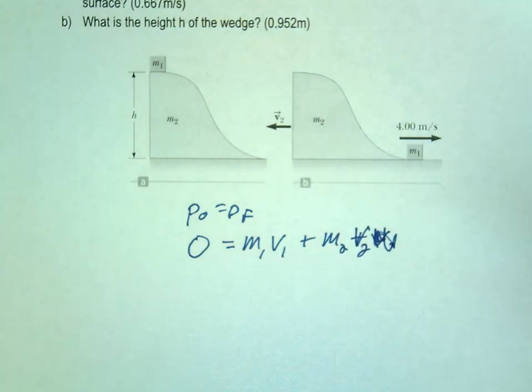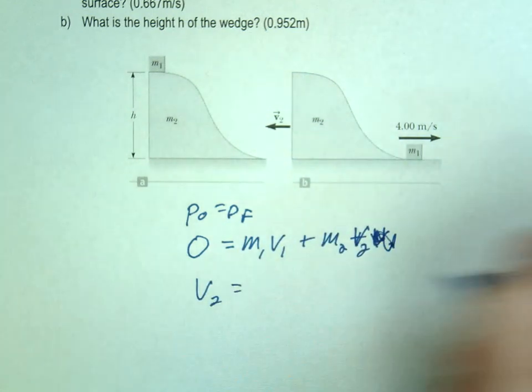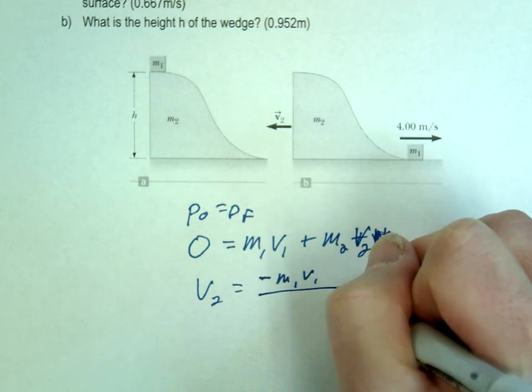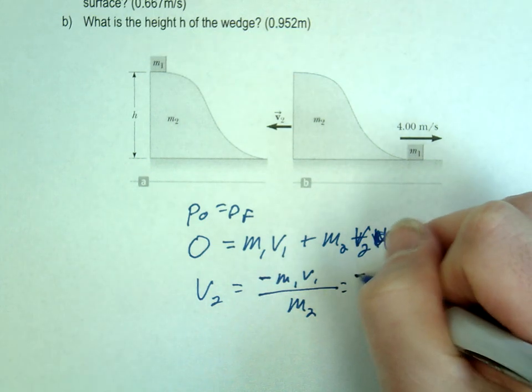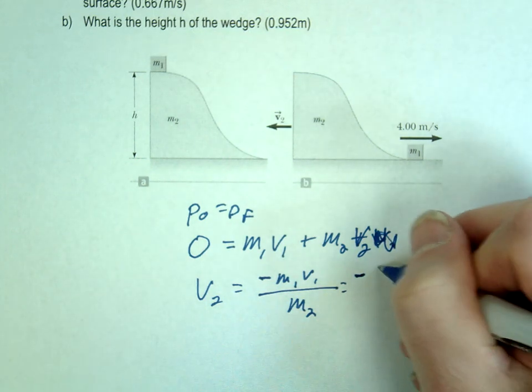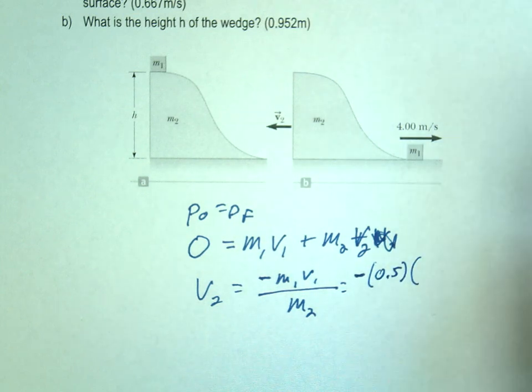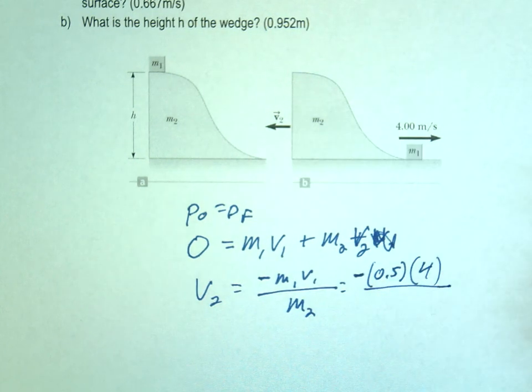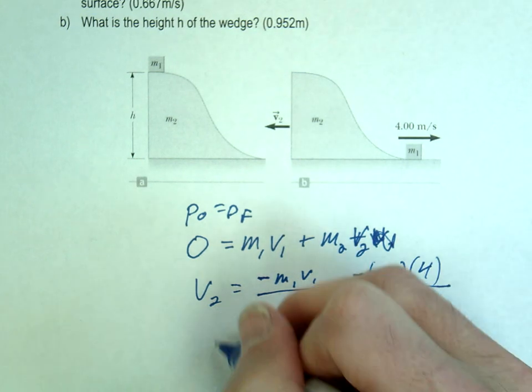So we're looking for v2. So v2 equals, do your algebra here, and you get negative m1v1 divided by m2. So plug in the numbers. m1 was 0.5, v1 was 4, and m2 was 3. Do the math.